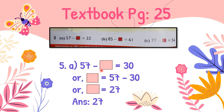Keep the blank box on the left side and write 57 first, because 57 is the biggest number. In subtraction, you always place the biggest number first. Then write minus 30 and do the subtraction. The answer is 27. So 57 minus 27 equals 30.